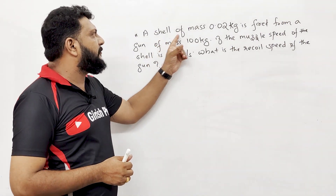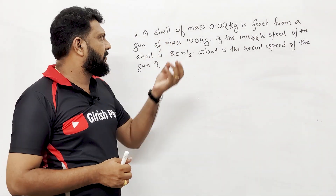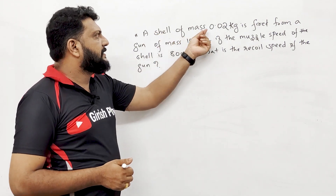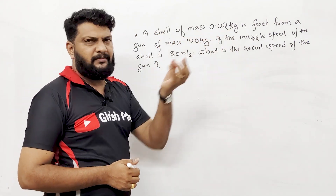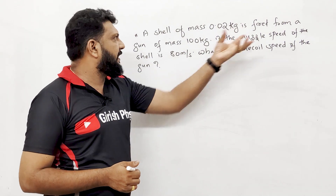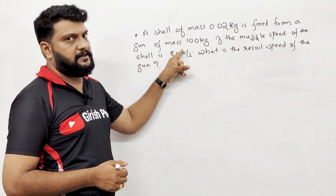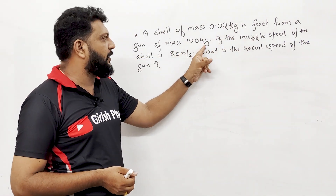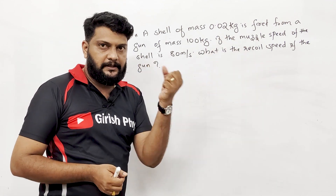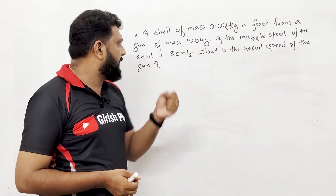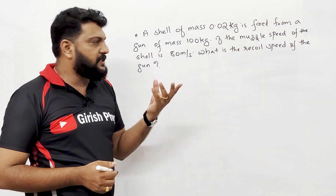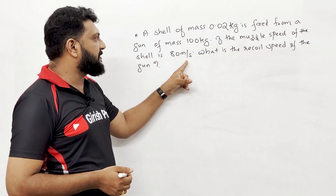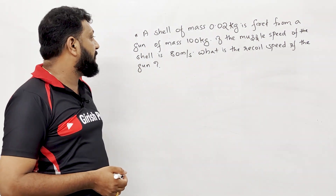Question: A shell of mass 0.02 kg is fired from a gun of mass 100 kg. If the muzzle speed of the shell is 80 metres per second, what is the recoil speed of the gun?